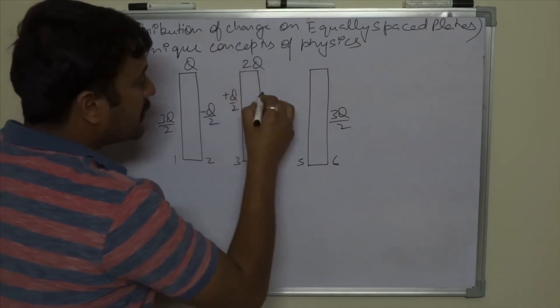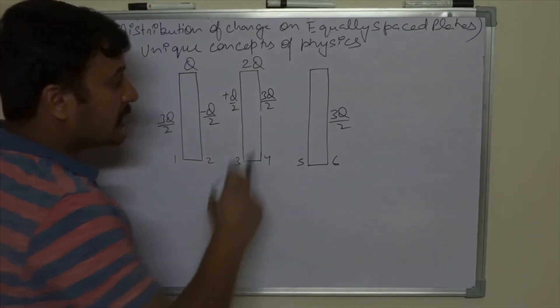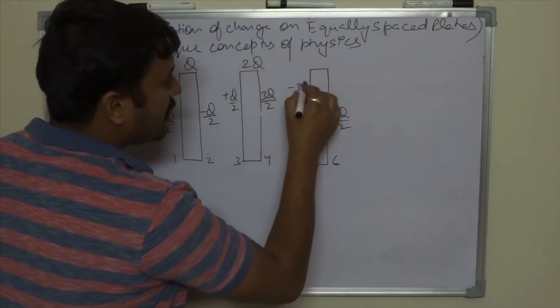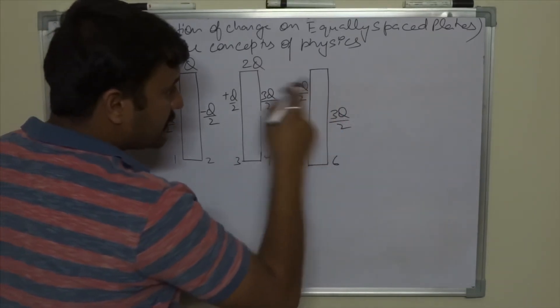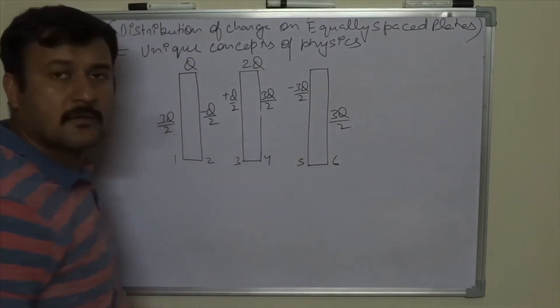Then remaining charge 3Q by 2 will be induced here. These should be bounded charges, and hence here charge should be minus 3Q by 2. As this plate is neutral, the sum of these charges should be zero. So this is the distribution.